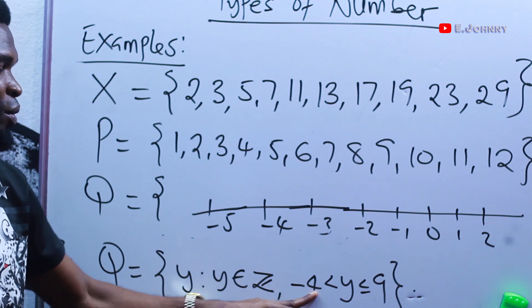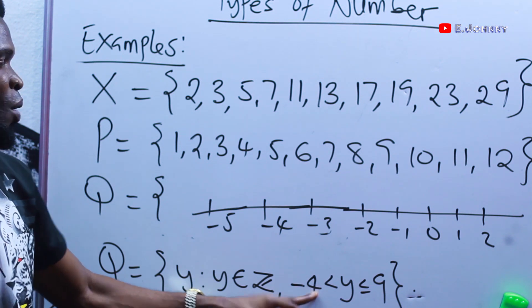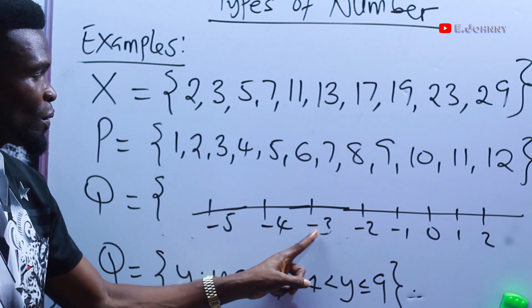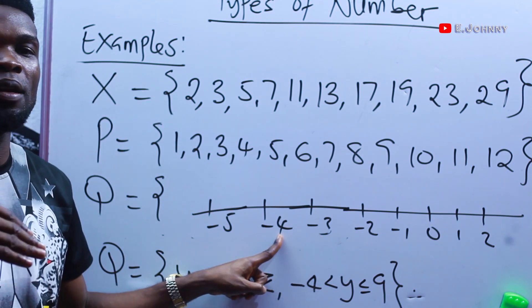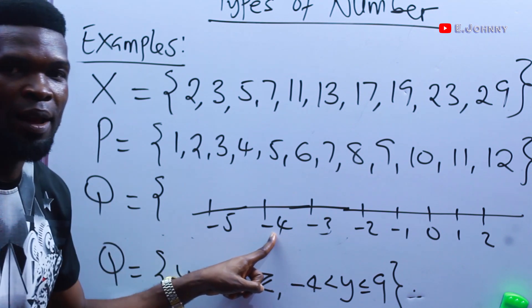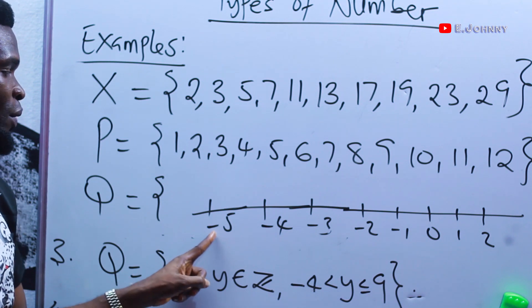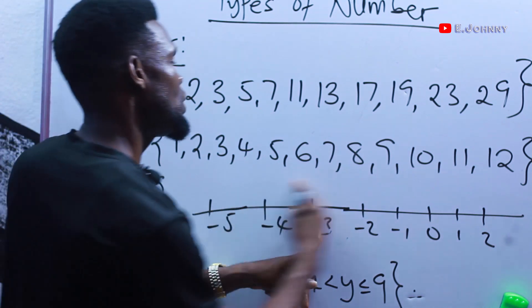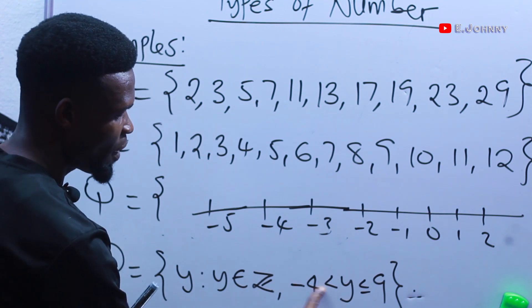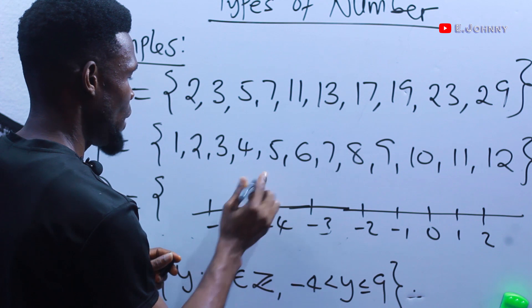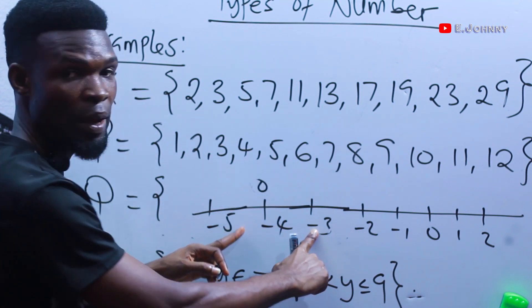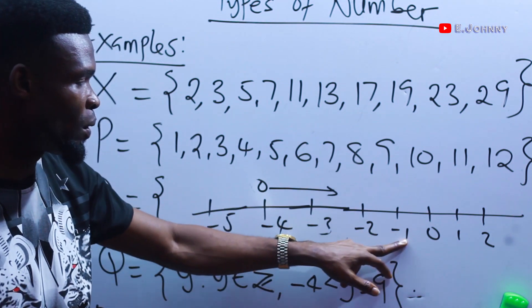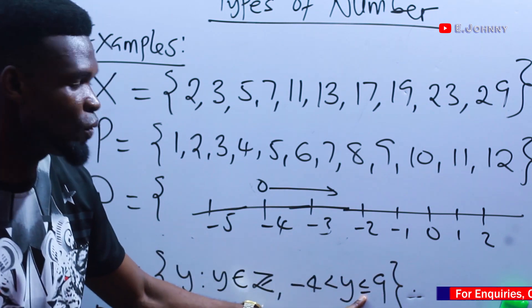On the number line, minus 4 is here. Since y is greater than minus 4, the first number greater than minus 4 is minus 3. The arrow goes in that direction: minus 3, minus 2, minus 1. Then y is less than or equal to 9, so the arrow continues through 0, 1, 2, 3, and so on up to 9. Since it is less than or equal to 9, the value 9 is inclusive.